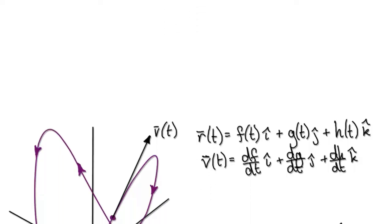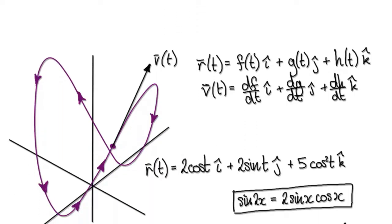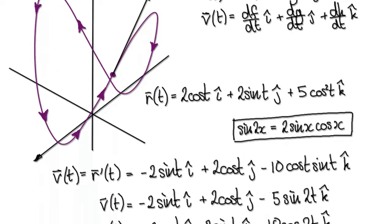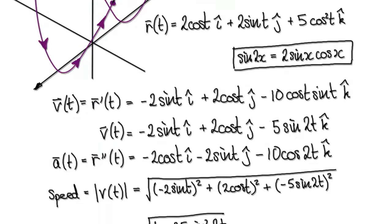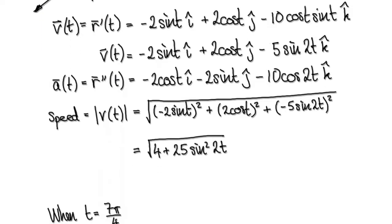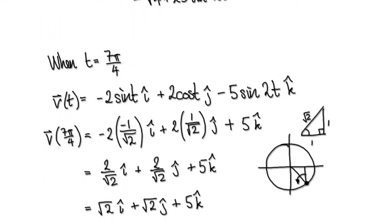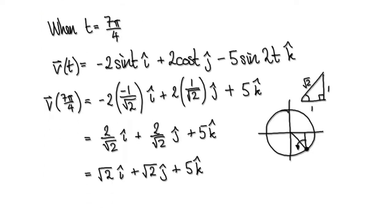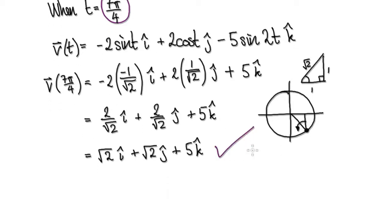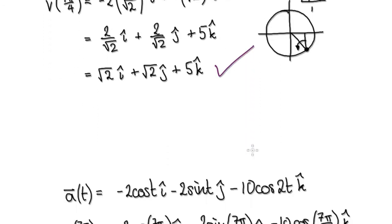Following on from the previous video, we got to a stage where we've worked out the velocity of the particle at a time of t equals 7π/4. So we've worked out the velocity. Now let's work out the acceleration.